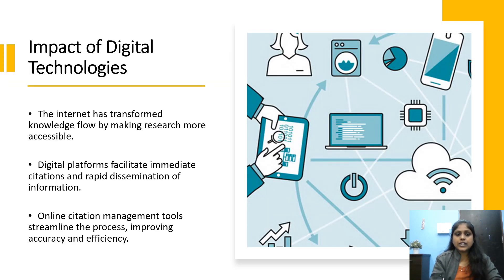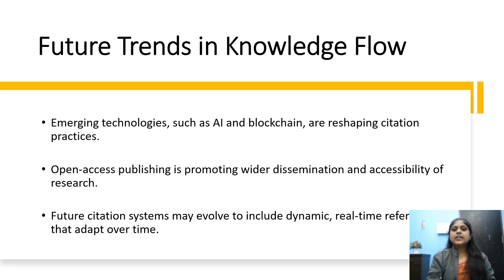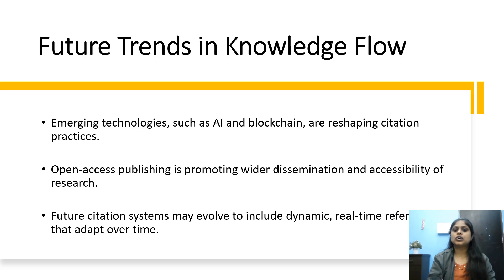Impact of Digital Technologies. The internet has transformed knowledge flow by making research more accessible. Digital platforms facilitate immediate citation and rapid dissemination of information. Online citation management tools streamline the process, improving accuracy and efficiency. Some research papers are not open access, but you can access them using certain websites — copy the reference title or DOI number to access those research papers.